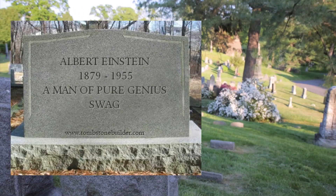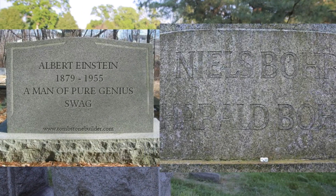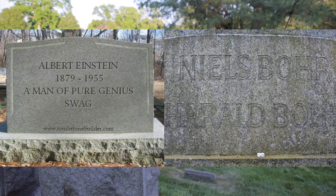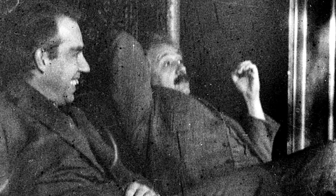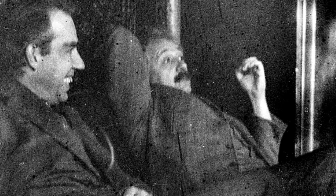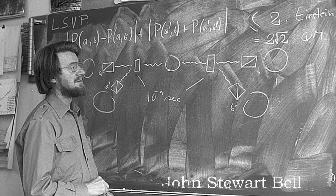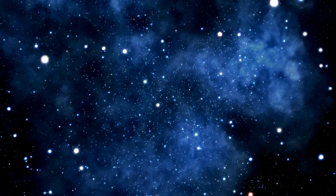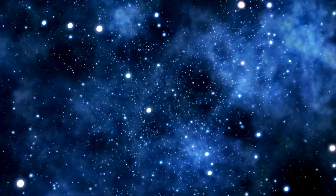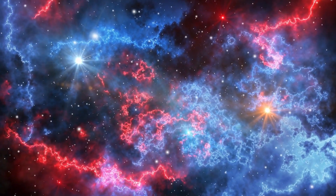Einstein died in 1955 and Bohr in 1962, and neither of them gave in to the other. It seemed like their dispute couldn't be resolved since experiments would give the same results either way. But in 1964, physicist John Stuart Bell came up with a theorem about entangled particles that allowed experiments to test the possibility of hidden variables. From the 1970s onward, experiment after experiment confirmed the predictions of standard quantum mechanics. In the end, nature itself overruled Einstein's objection.